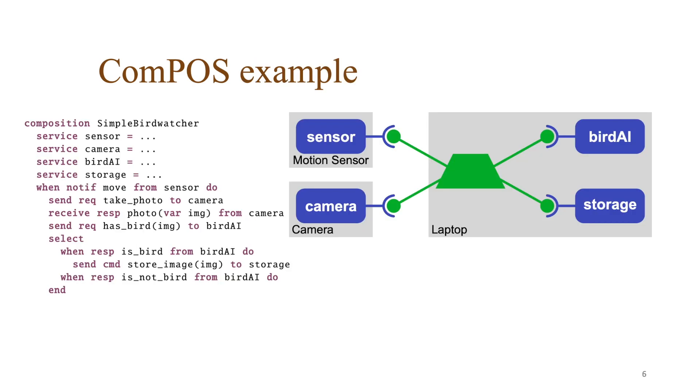Now we want to show COMPOS with the help of the bird watching scenario. To the left is the composition. The composition begins by defining the services used in it, then follows the coordination script that we will go through. To the right is an overview of the system containing the motion sensor and the camera, but also the bird AI and the storage service running on the same laptop as the composition.